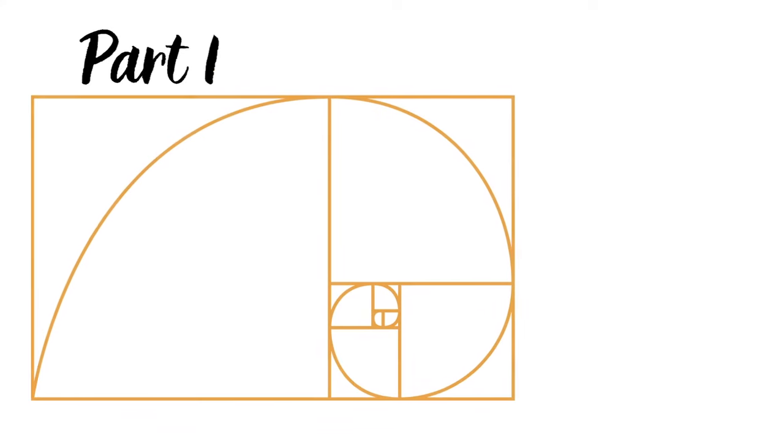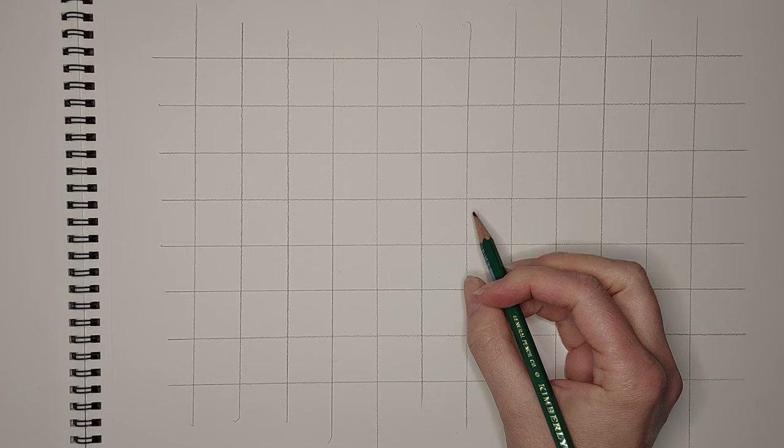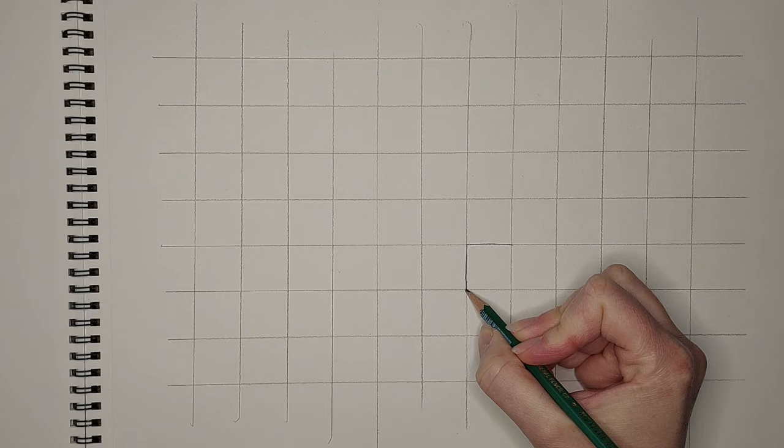The Fibonacci sequence is a spiral that we see in nature and I wanted to show you the math real quick using a grid. So we start with the number one and I'm just going to outline this so you can see the square that I'm starting with here.